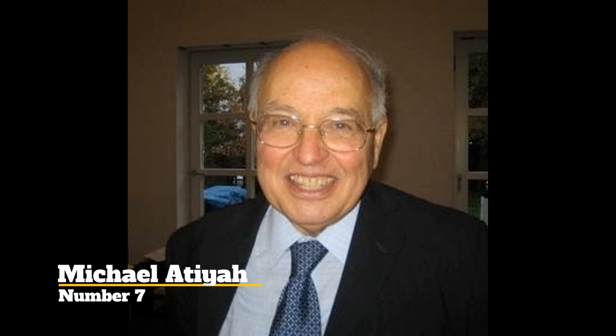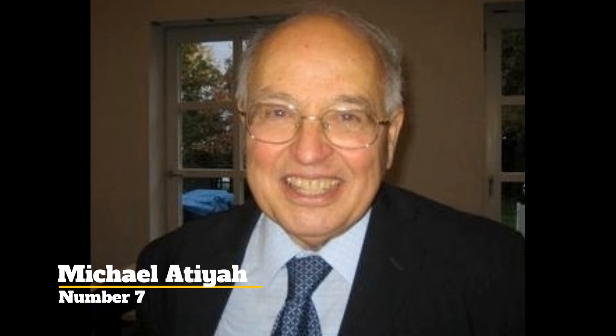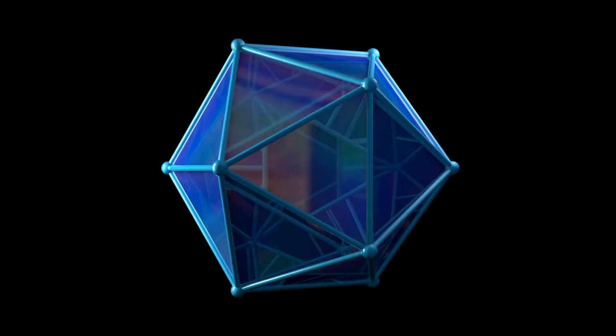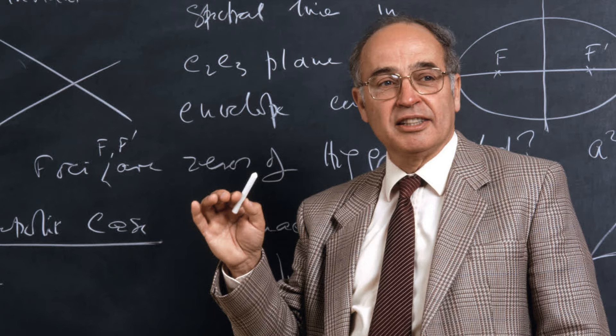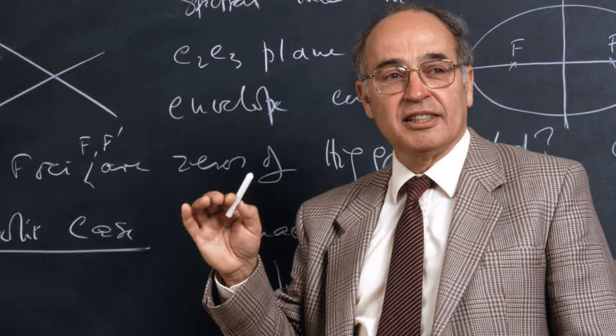Number 7. Michael Atiyah. Michael Atiyah, an influential English mathematician, made profound contributions across a spectrum of mathematical disciplines. Notably, he played a pivotal role in the development of topology, geometry, and mathematical physics. Atiyah's work on K-theory, a branch of algebraic topology, revolutionized the field and laid the foundation for groundbreaking advancements in algebraic geometry and mathematical physics.